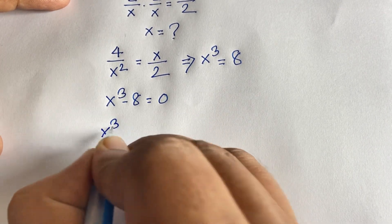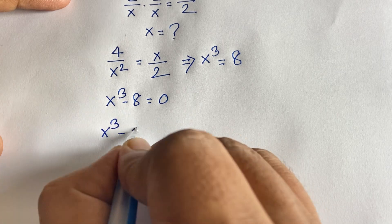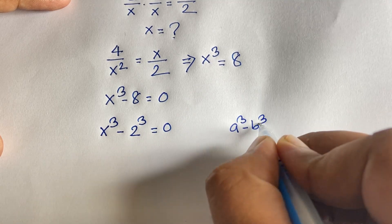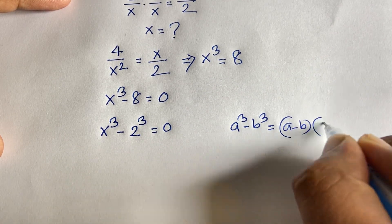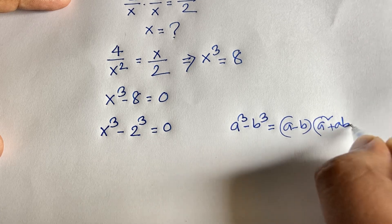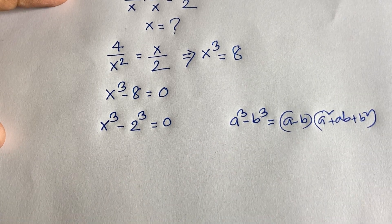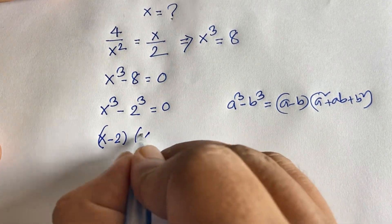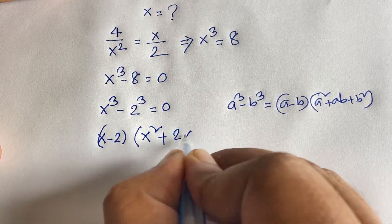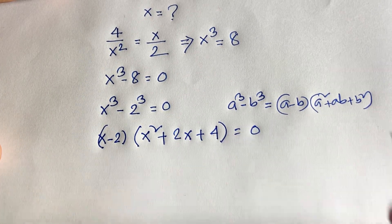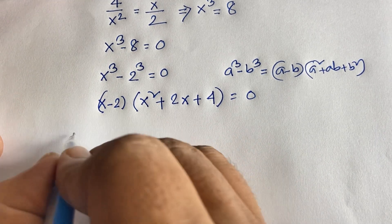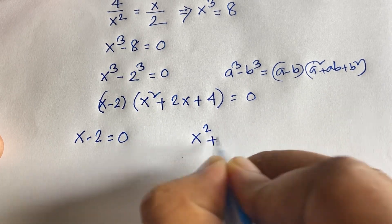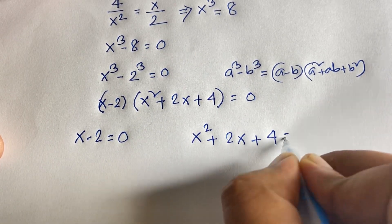Our question is x to the power 3 minus 8, which is x³ minus 2³ equals 0. We know that a cube minus b cube equals a minus b times a squared plus ab plus b squared. According to this rule, it will be x minus 2 times x squared plus 2x plus 4 is equal to 0. So we find two cases: x minus 2 equals 0, and x squared plus 2x plus 4 equals 0.